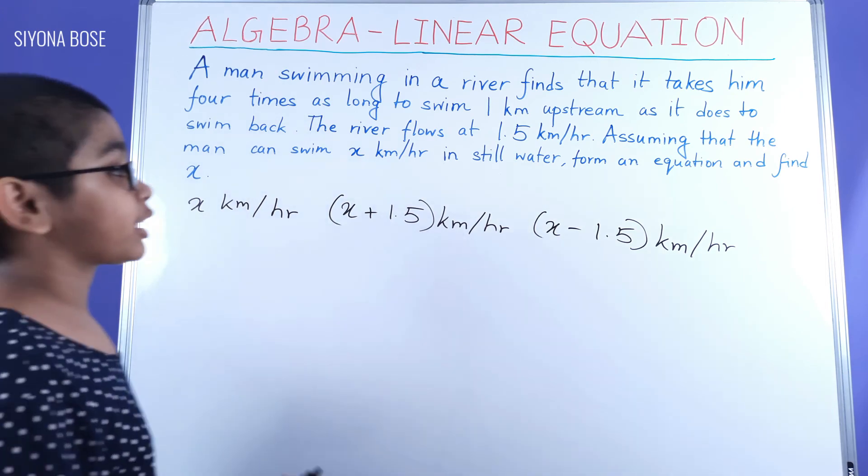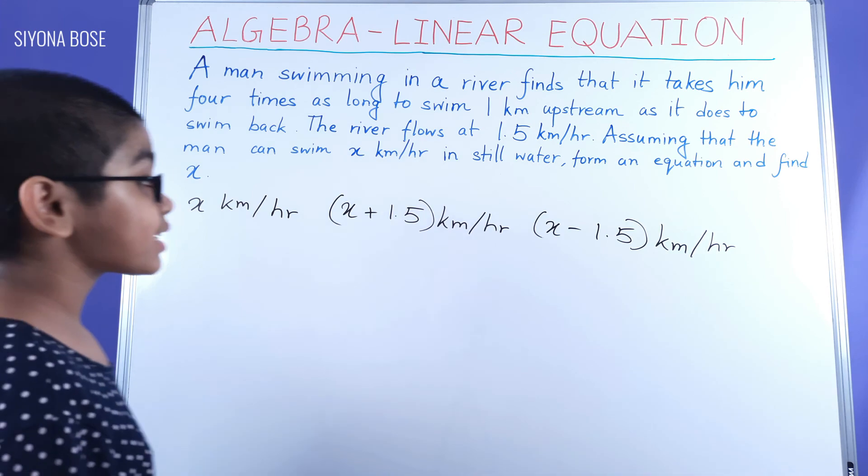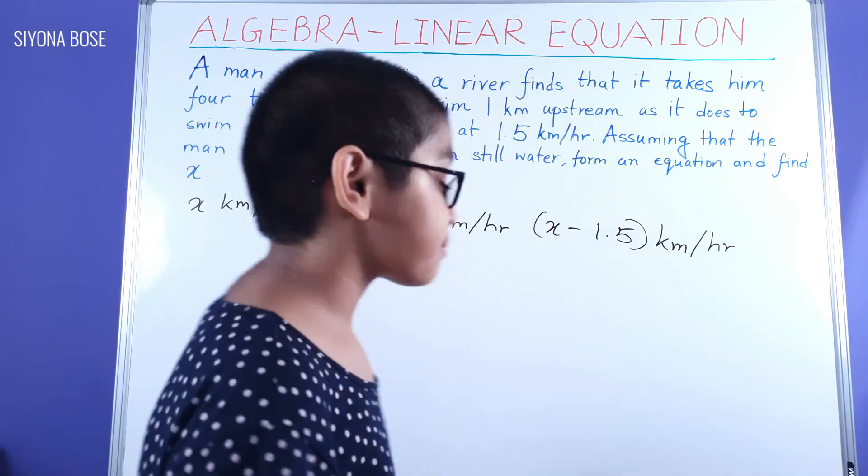The formula of time is distance by speed. Distance by speed is equal to time.